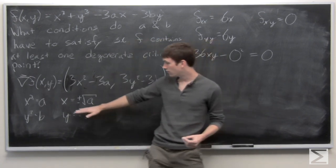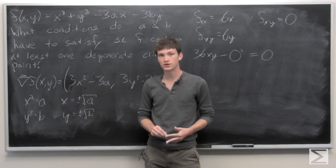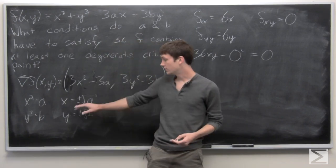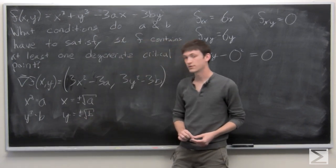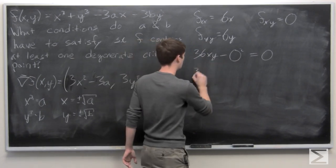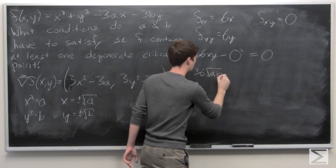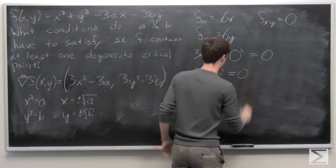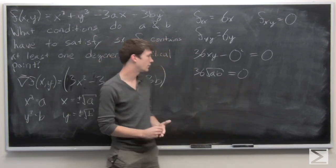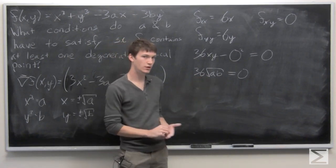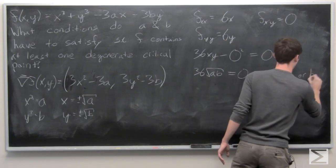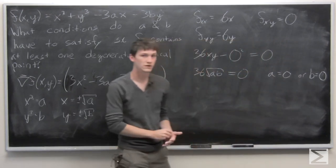We know from before that the critical points occur when x is equal to plus or minus the square root of a and y is equal to plus or minus the square root of b. Plugging that in, we get 36 times the square root of a times the square root of b is equal to 0. This only occurs when either a equals 0 or b equals 0, or both.